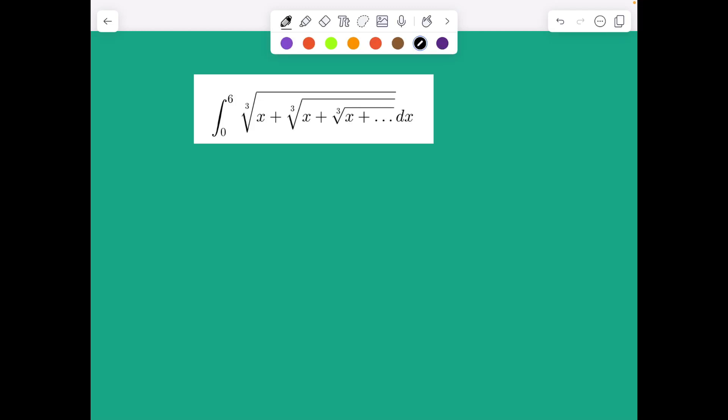Morning all of you. Let's see this problem. We need to integrate from 0 to 6 the cube root of x plus cube root of x, and keep on chaining it forever. This problem reminds us of a typical question.